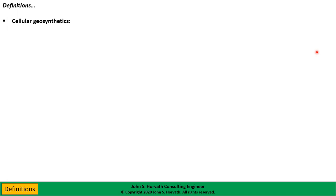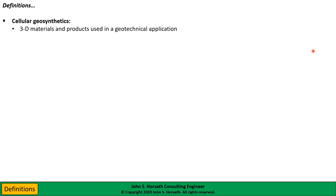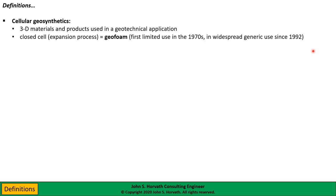The overall topic of discussion is what we call cellular geosynthetics — a family of geosynthetic materials. These are all three-dimensional materials and products used in a geotechnical application. Cellular geosynthetics are quite different from traditional geosynthetics that are two-dimensional or planar. Most geosynthetics as we know them — such as geotextiles, geomembranes, geogrids, and metallic reinforcements of various kinds — are certainly two-dimensional for analytical purposes.